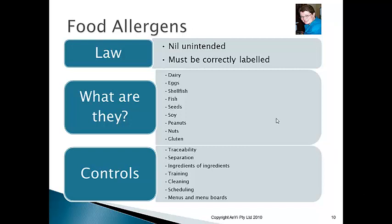Food allergens — just briefly. The recognised allergens are: dairy, eggs, shellfish, fish, seeds, soy, peanuts, nuts, and gluten. The number one food allergen in Australia is gluten — a protein found in oats, wheat, rye, and barley, and any product containing them. Peanuts are not actually a nut — they are a legume, related to soy. Nuts are things that grow on trees, like almonds, Brazil nuts, and macadamias.